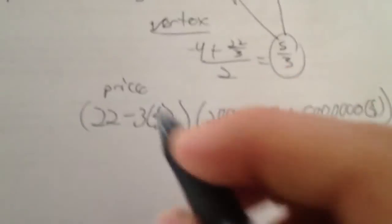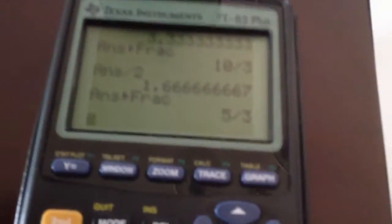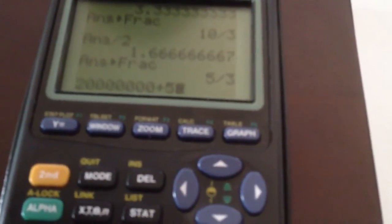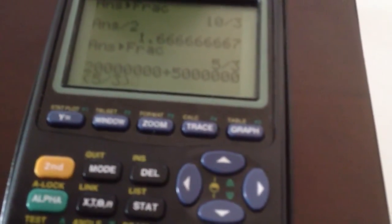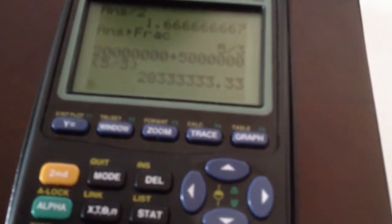So 22 minus 3 times 5 over 3, that ends up being the 3's cancel out, so you get minus 5. So that tells you you should lower your price by $5, basically, and tells you your price should be $17. That's how much you should charge. When I do that, let's come over here to the calculator. 20 million plus 5 million times that 5 thirds is going to give me 28,333,333.33 people. So that's how many people.